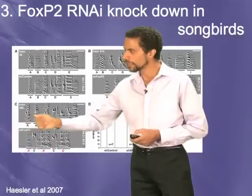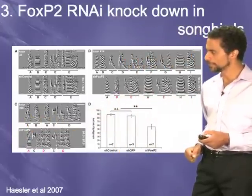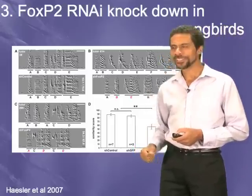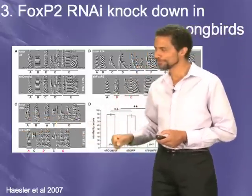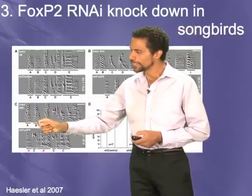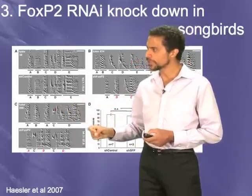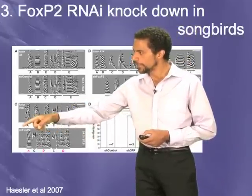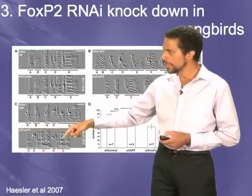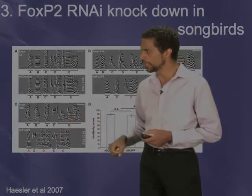Now we're going to play the song of the tutee with the FoxP2 knockdown. What you can hear is that the bird is still singing, but he hasn't quite imitated the song that well. He's imitated individual syllables, but he produces them out of sequence. And some of those syllables — like syllable D here — are not a good match for the syllable D in the tutor's song.